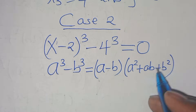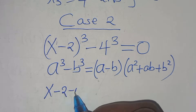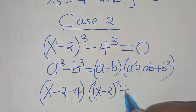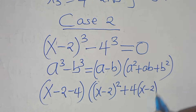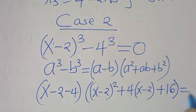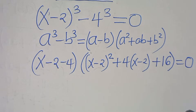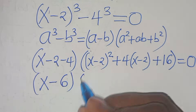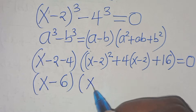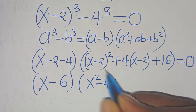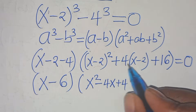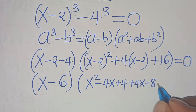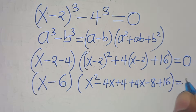Applying this identity, we have x minus 2 subtract 4, then x minus 2 raised to the power of 2, plus 4 multiplied by x minus 2, then plus 4 squared which is 16. This equals 0. Now x minus 2 minus 4 is x minus 6. Expanding: x squared minus 4x plus 4, then opening the parenthesis: plus 4x minus 8, then plus 16. This equals 0.